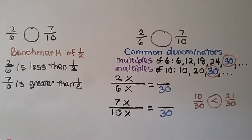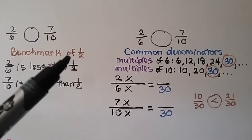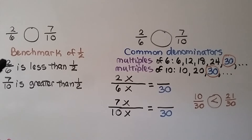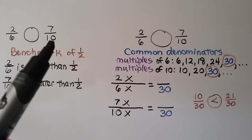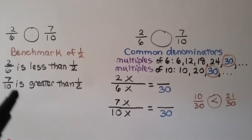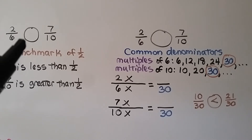We can compare two-sixths and seven-tenths using a benchmark of a half. We know half of six is three, so three-sixths would be half. This is only two-sixths, so two-sixths is less than one-half. We know half of ten is five, so five-tenths would be a half, and this is seven-tenths — that's more than five. So seven-tenths is greater than half, and we know two-sixths is less than seven-tenths.